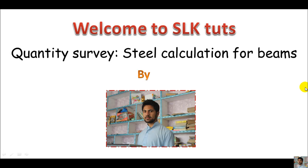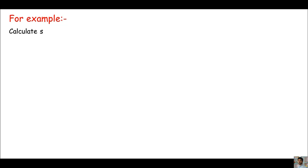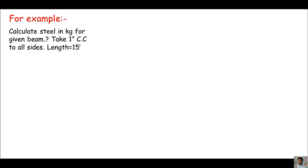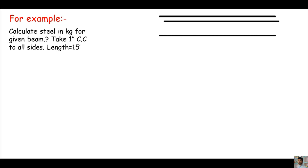In this example we are asked to calculate steel in kg for a given beam. We are informed to take one inch concrete cover to all sides, and the length of the beam is 15 feet. Before starting the calculation of our steels, let me show you how the beam looks. Here we have a 3D wireframe of this beam which shows the combination of main bars with stirrups.